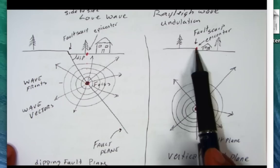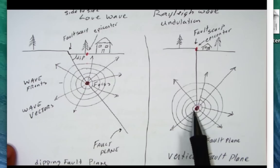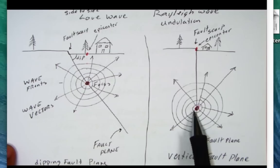With faults that are dipping not at 90 degrees, something less than 90 degrees, you'll find that the epicenter will not coincide with the fault.